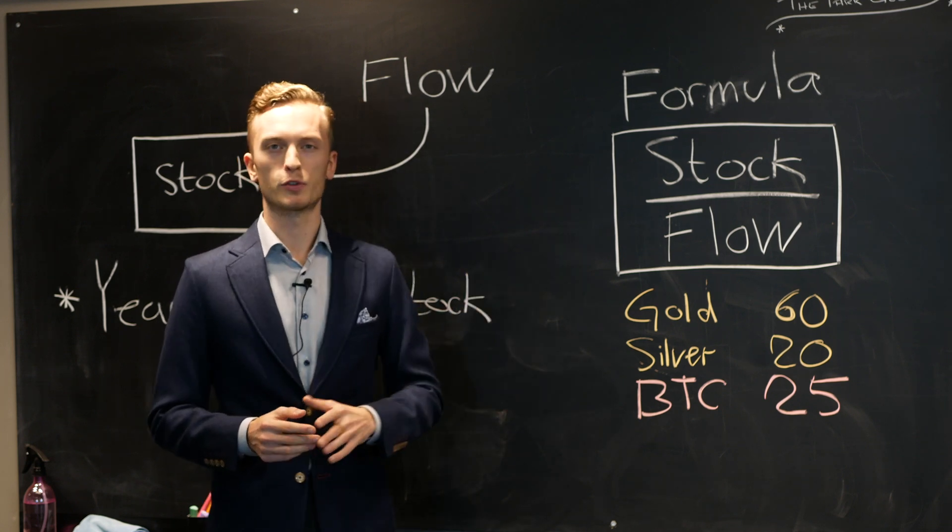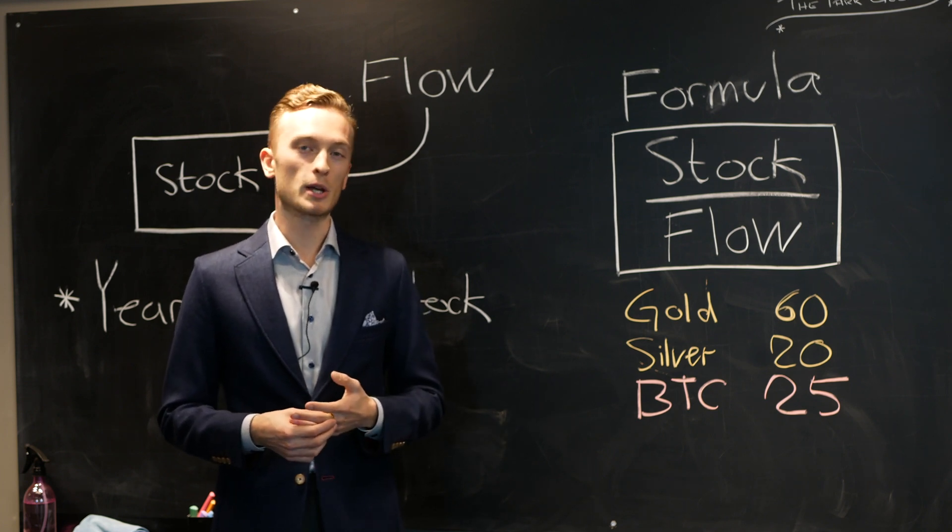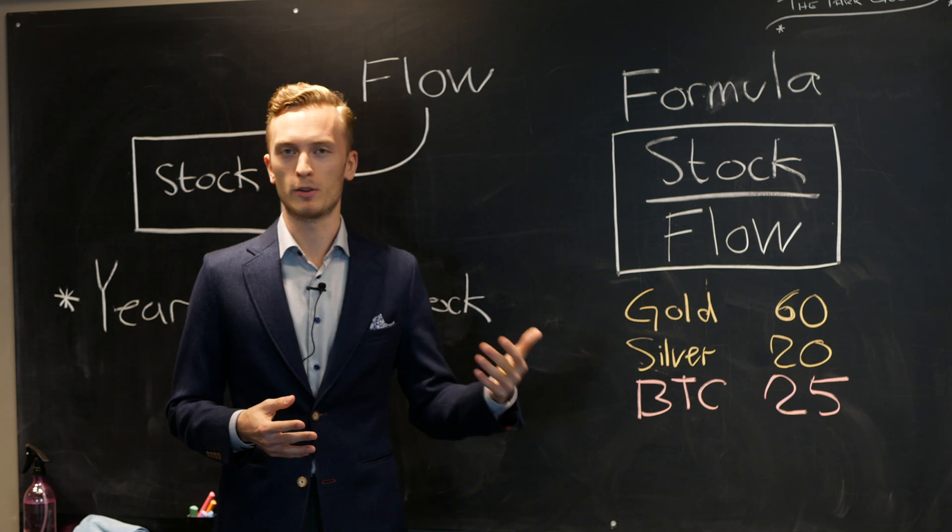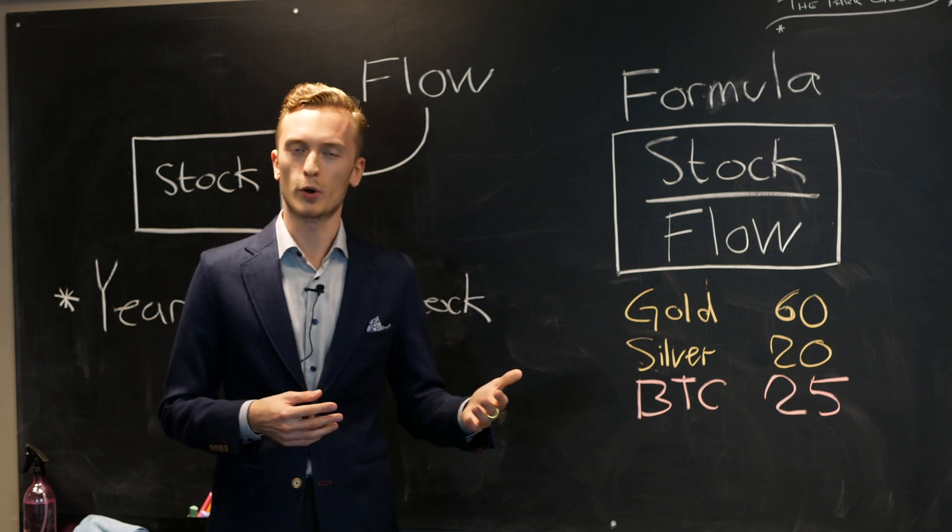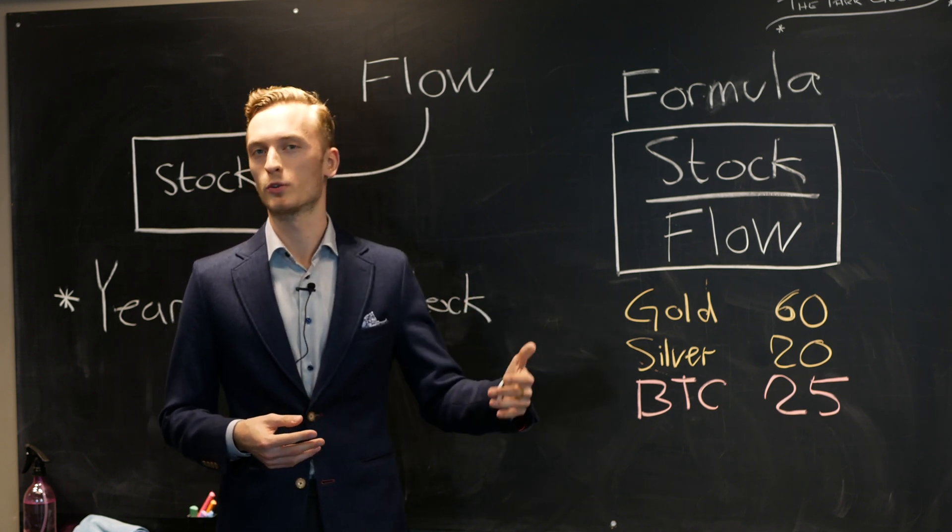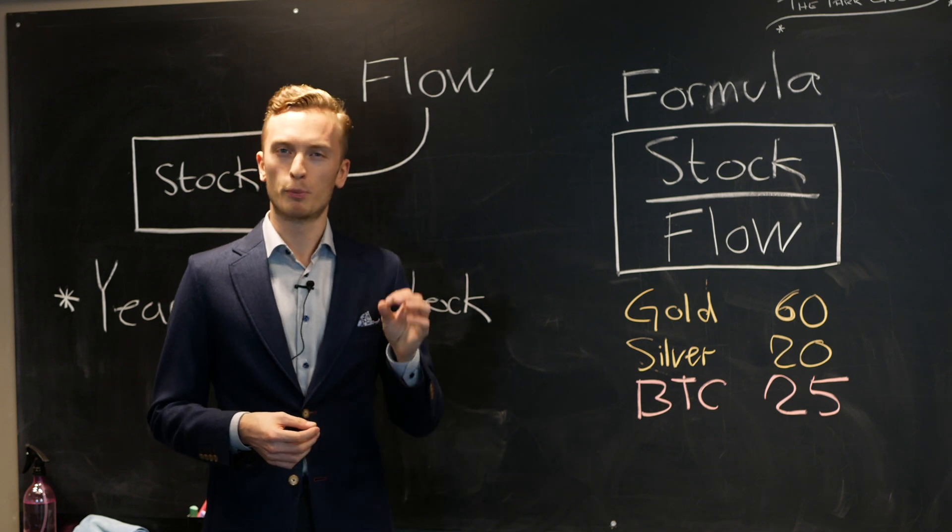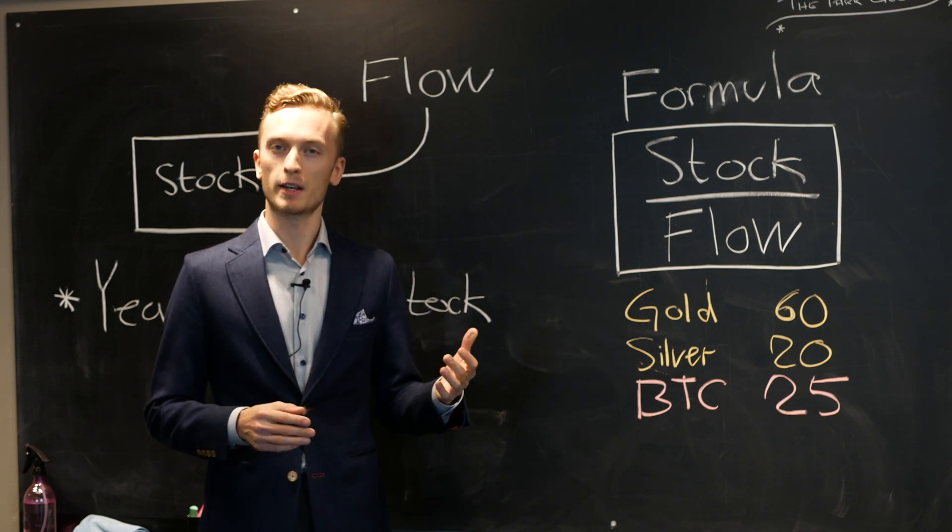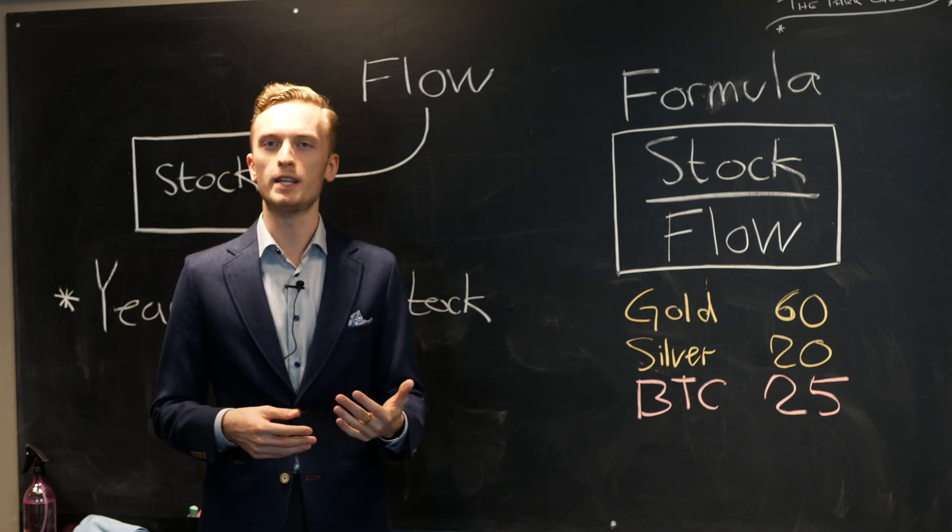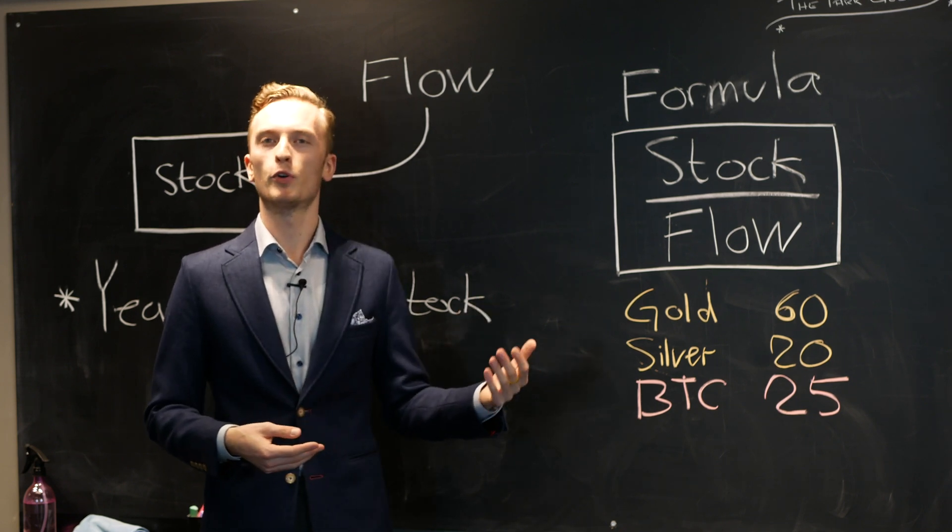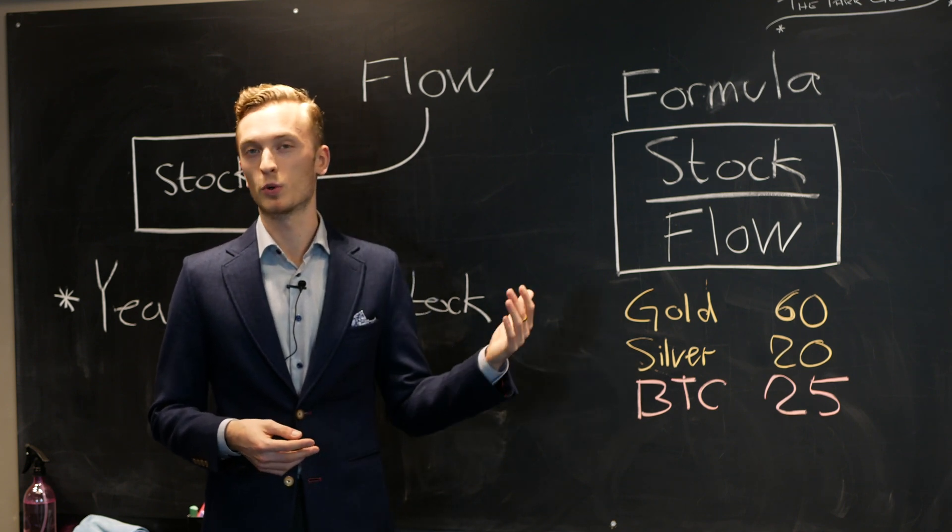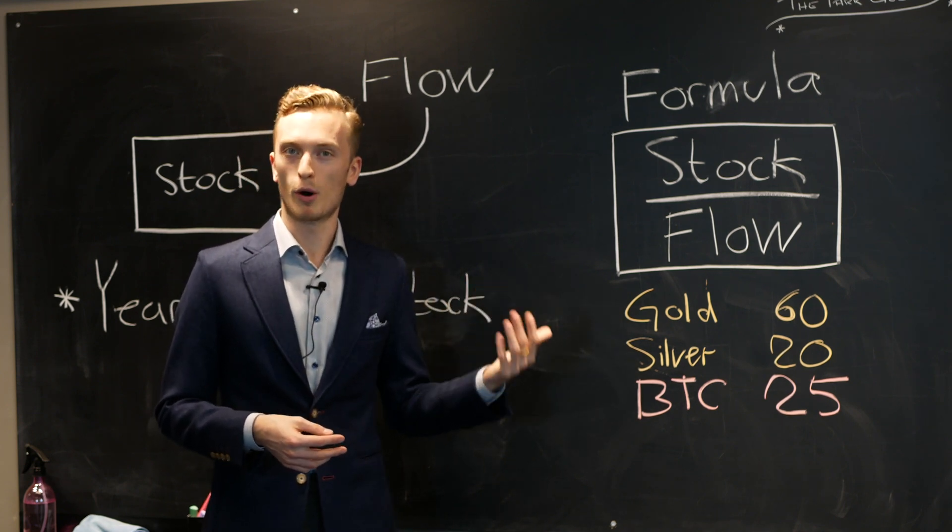From there the stock to flow model really fits in because Bitcoin is a scarce asset. It's very hard to create new Bitcoin. It takes a lot of work. You need to put down the work in order to produce Bitcoin and you need to prove that you put that work down through proof of work. The same thing is true for other precious metals of course that you need this expenditure before you can produce the actual valuable and scarce asset and that is of course what Bitcoin tried to model when it was created.